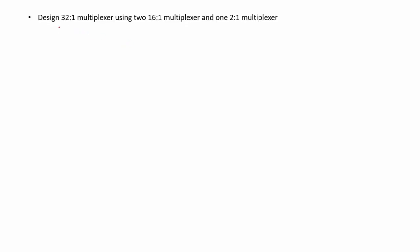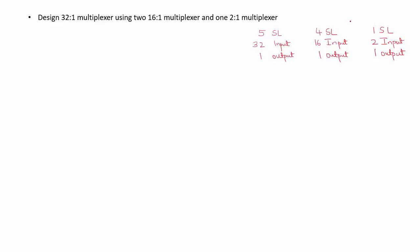In the second example, we are asked to design a 32-to-1 multiplexer using 2 16-to-1 multiplexers and 1 2-to-1 multiplexer. A 32-to-1 multiplexer has 5 select lines, 32 input lines and 1 output. A 16-to-1 multiplexer has 4 select lines, 16 input lines and 1 output. In order to get 32 input lines, I will need 2 16-to-1 multiplexers.